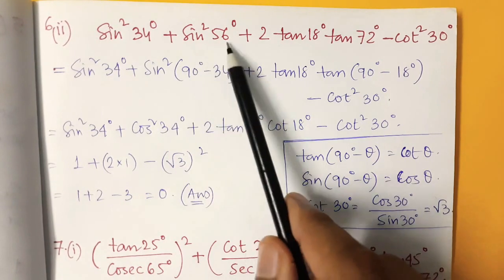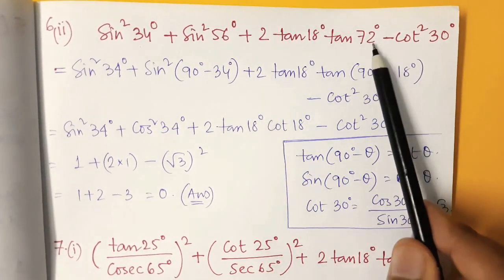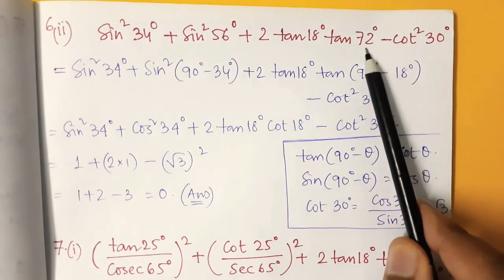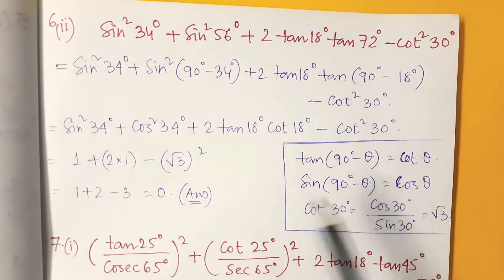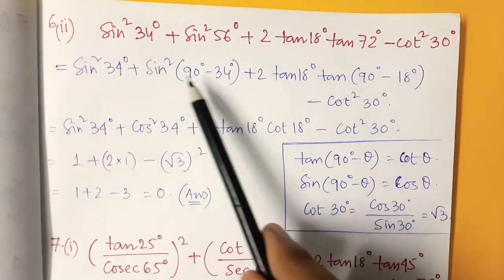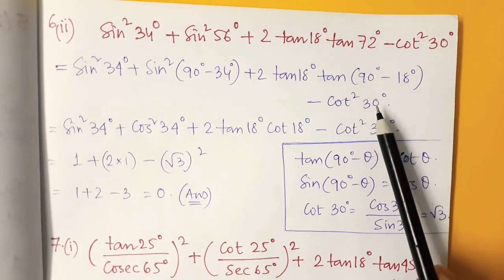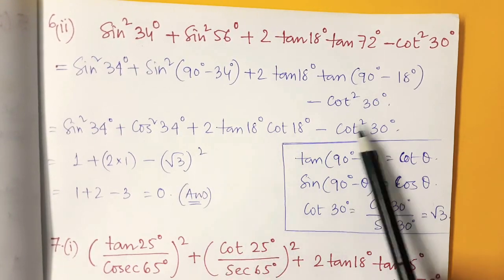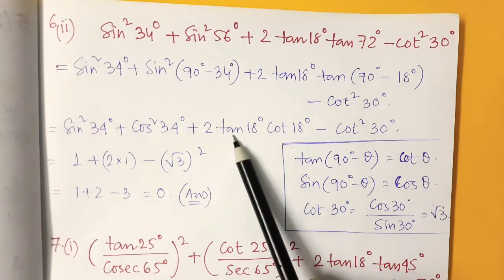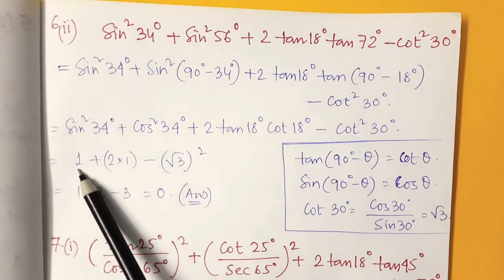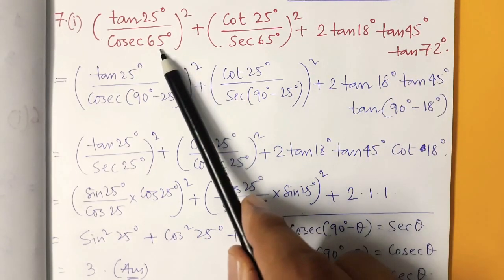Now problem 6(ii). Here 56 plus 34 add up to 90, so we replace 56 by (90° − 34°). Similarly 72 and 18 add up to 90, so we replace 72 by (90° − 18°). Applying the complementary angle formulas, we get sin²34 + cos²34, and cot 30° = √3, so cot²30° = 3. Since tan θ × cot θ = 1 and sin²θ + cos²θ = 1, the answer is 0.